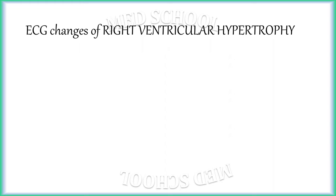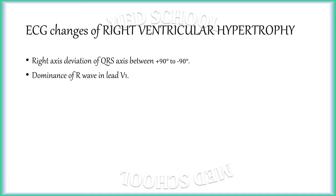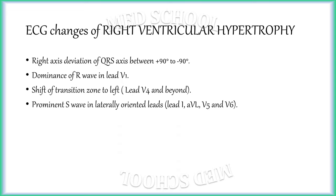To summarize, ECG changes of right ventricular hypertrophy are: right axis deviation of QRS axis between plus 90 degrees to plus 180 degrees; dominance of R wave in lead V1; shift of transition zone to the left — that is lead V4 and beyond; and prominent S wave in laterally oriented leads — that is leads I, aVL, V5, and V6.